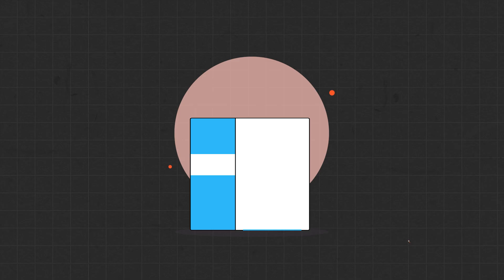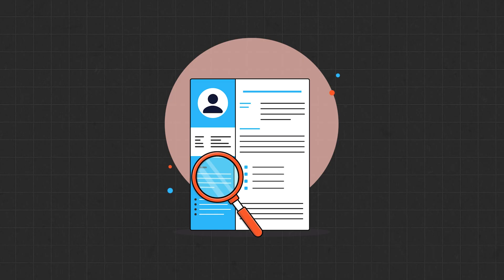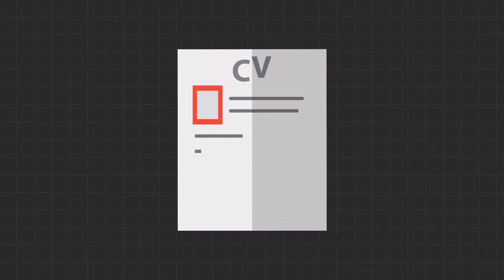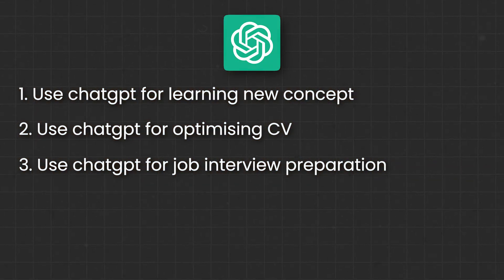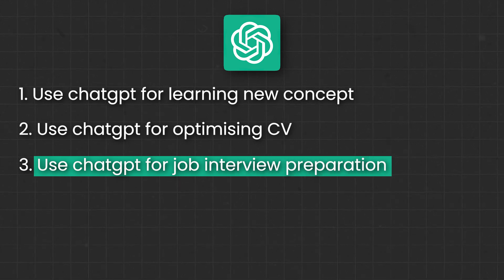The second way I use AI tools is for optimizing my CV when I'm applying for contract or permanent roles. This saves me a lot of time during the job hunting phase. I start with a base CV and template, then use prompts in ChatGPT to optimize the summary and skills section according to the job description. I'll post the prompts I use in the comment section, so make sure to check those out.